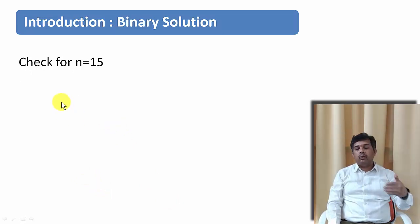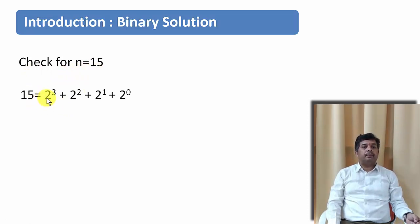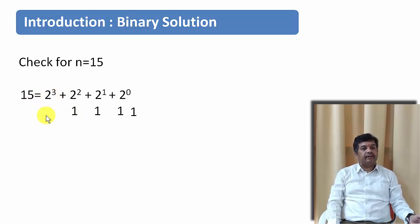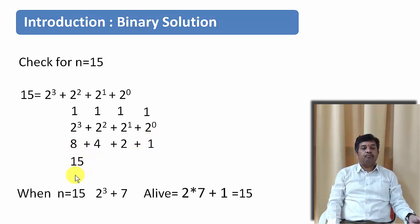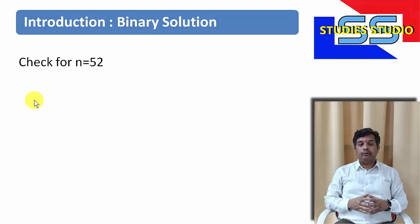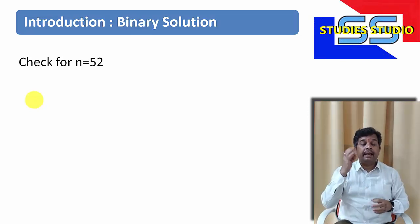One more solution uses binary representation. For N equals 15: 15 = 2³ + 2² + 2¹ + 2⁰ in binary (1111). Take the most significant bit and move it to the rightmost position. Then multiply each bit by its corresponding power of 2: 1×8 + 1×4 + 1×2 + 1×1 = 15. So person 15 is alive. According to our formula too: 15 = 2³ + 7, so alive = 2×7+1 = 15. The task for you: find who will be alive when N equals 52 — please write your answer in the comments.